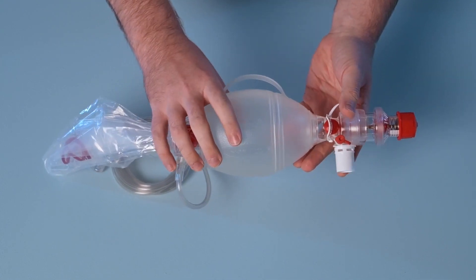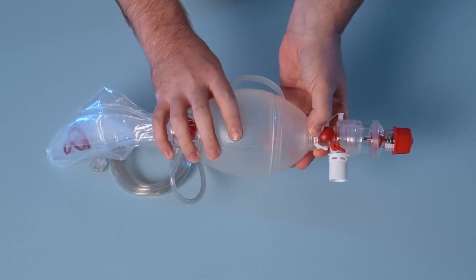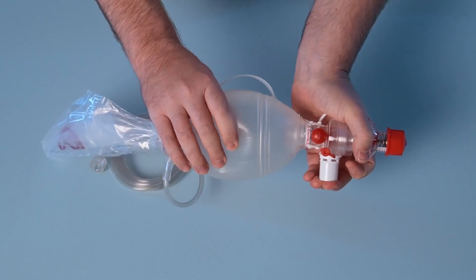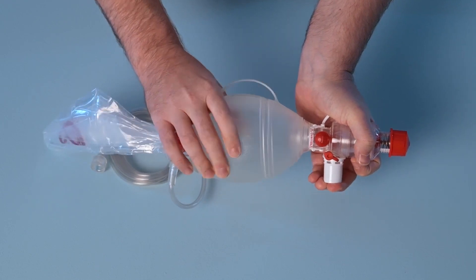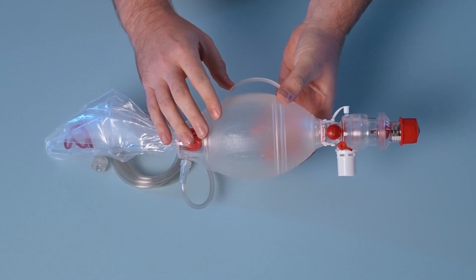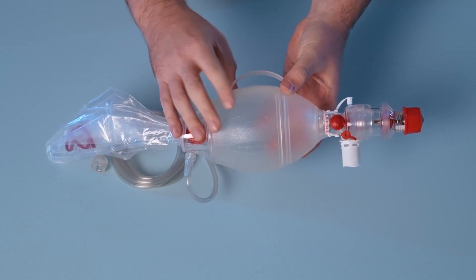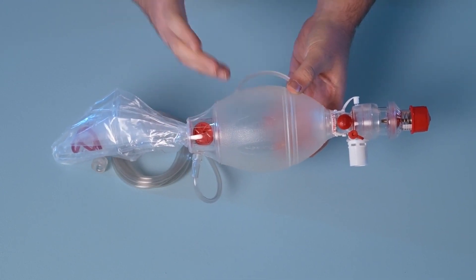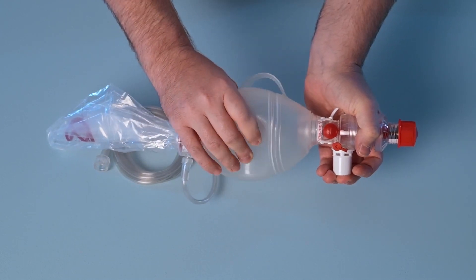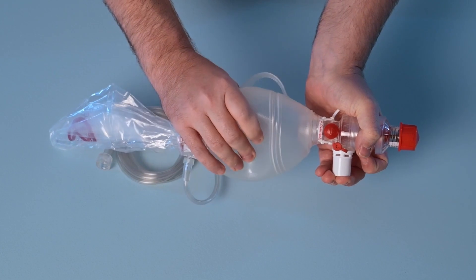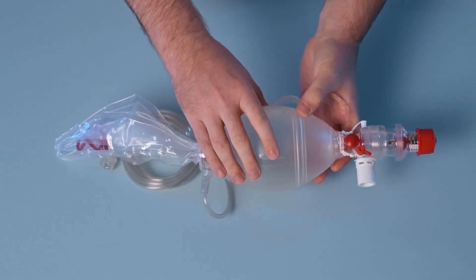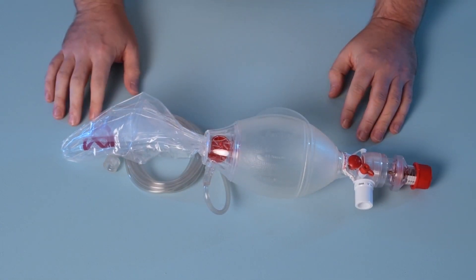Next disengage the override clip and repeat the process. This time the pop-off valve should activate allowing for the air within the resuscitator to escape. Squeeze and release the product several times to ensure suitable functionality of the valve system. There should also be audible feedback of the valve disc releasing which also indicates correct function.